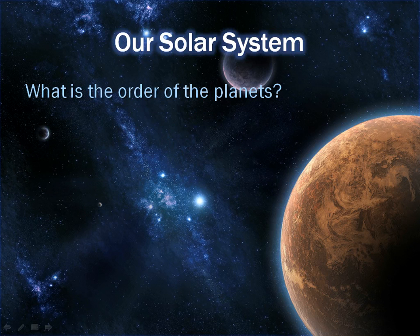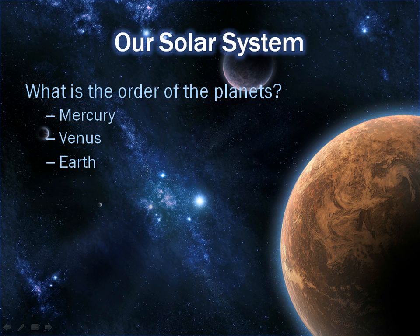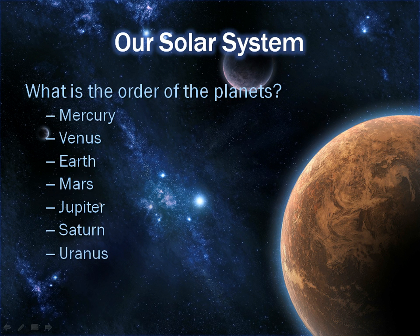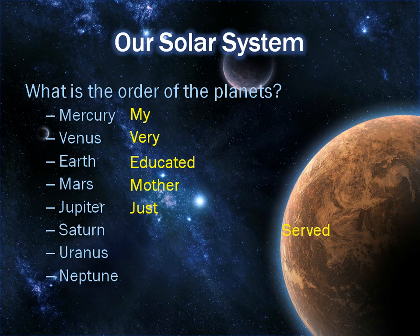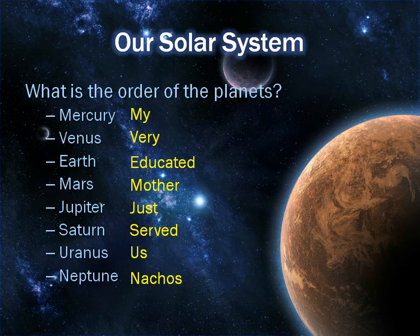The next topic is what is the order of the planets? It's Mercury, Venus, Earth, Mars, Jupiter, Saturn, Uranus, and Neptune. A popular mnemonic to remember that is: 'My very educated mother just served us nachos.' That can help you remember the order of the planets — kind of a goofy phrase that will help you out. If there's something else that helps you, go ahead and use that as well.